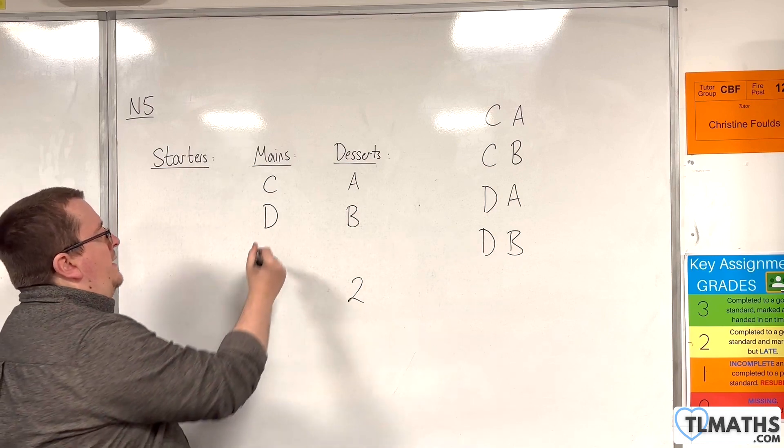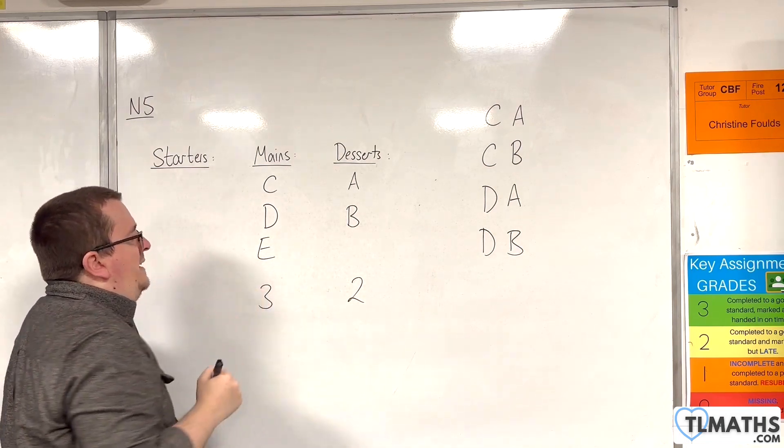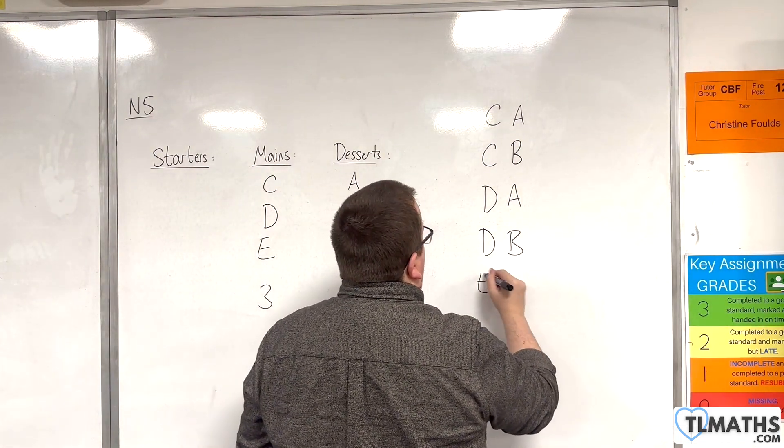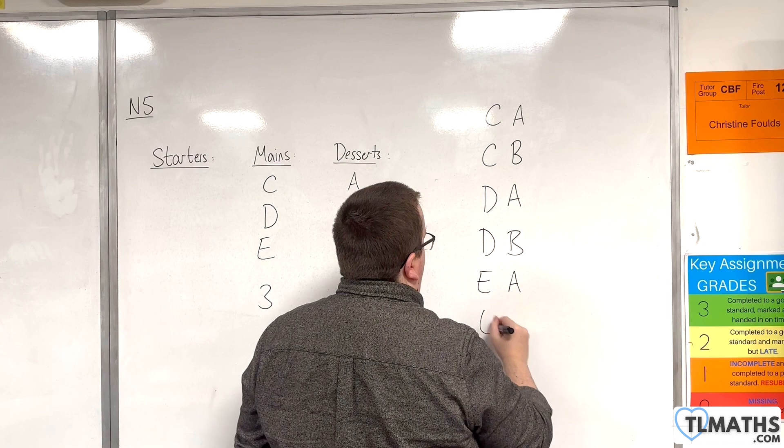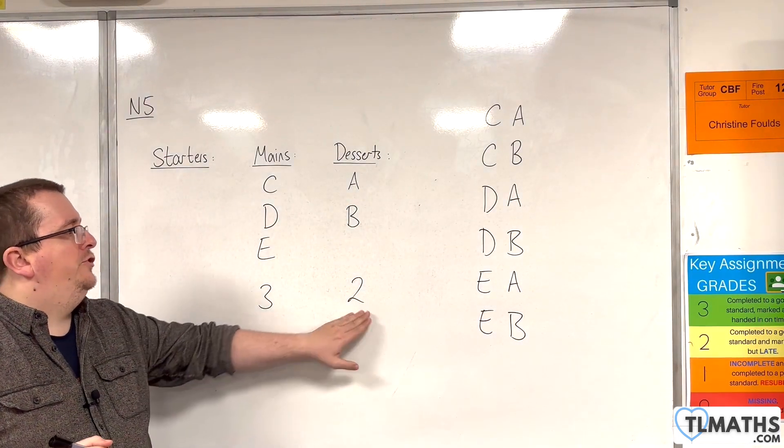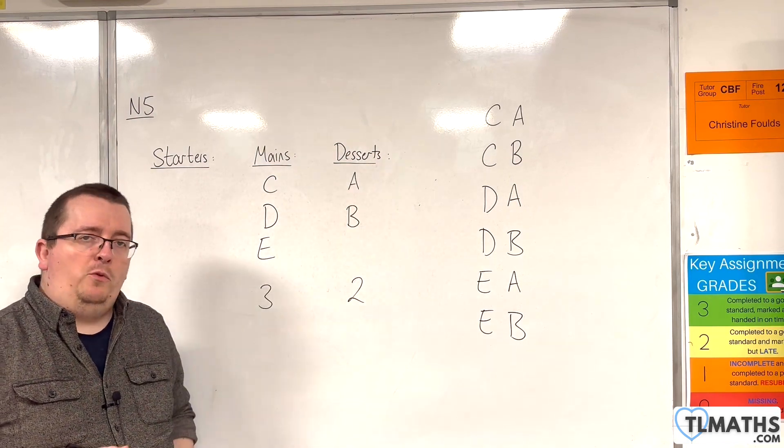So, let's add in another main. Let's say we've got three mains now: C, D, and E. So, then we could have E, then A, or E, then B. So, we have three mains, two desserts. Three times two is six possible options.